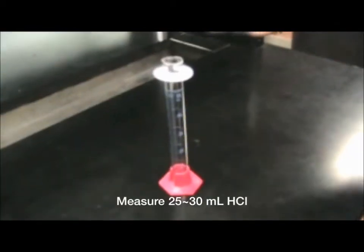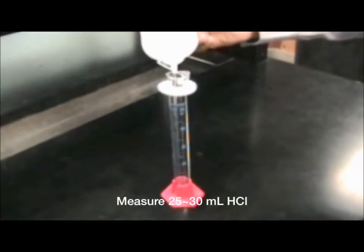Next, you need to measure about 25 to 30 milliliters of 1 molar HCl into a graduated cylinder and record the volume.